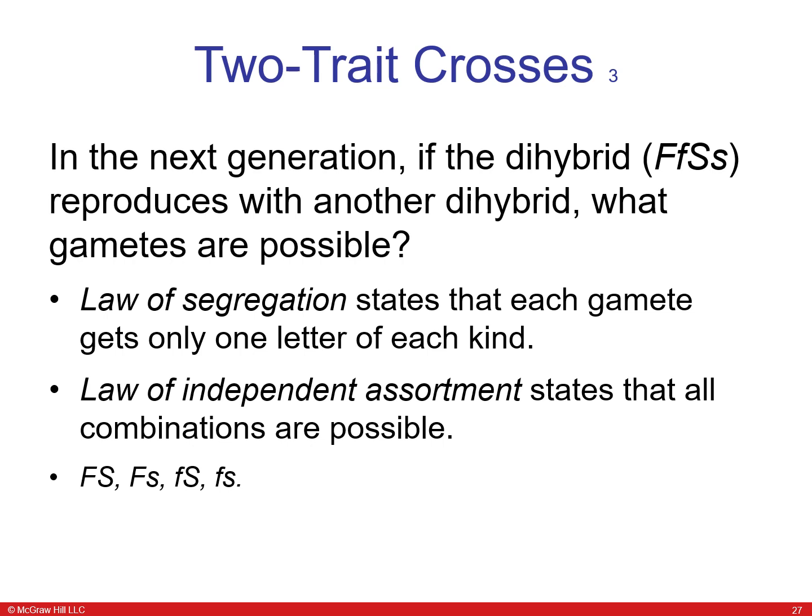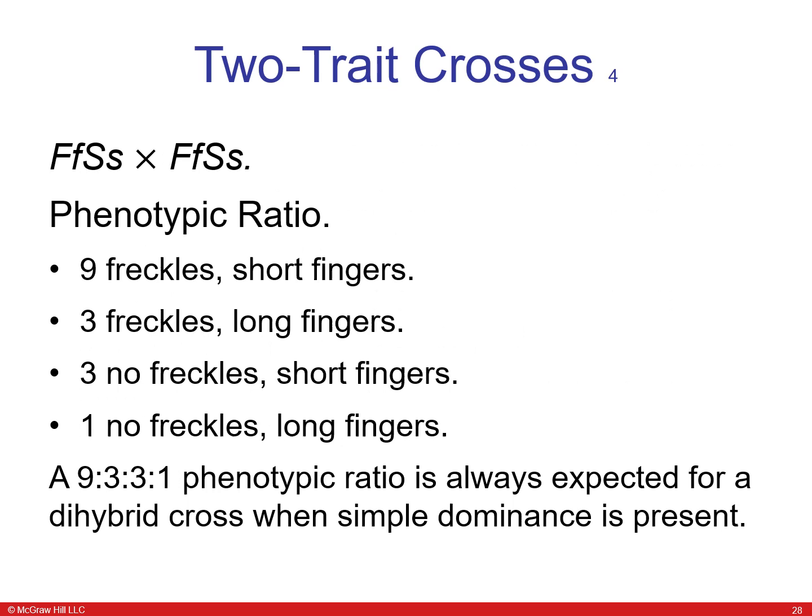In the next generation, if the hybrid heterozygote reproduces, the Law of Segregation states each gamete gets one letter of each kind, and the Law of Independent Assortment states all combinations are possible. In a typical dihybrid cross the phenotypic ratio is nine to three to three to one: nine individuals have freckles with short fingers, three have freckles with long fingers, three have no freckles with short fingers, and one has no freckles and long fingers.